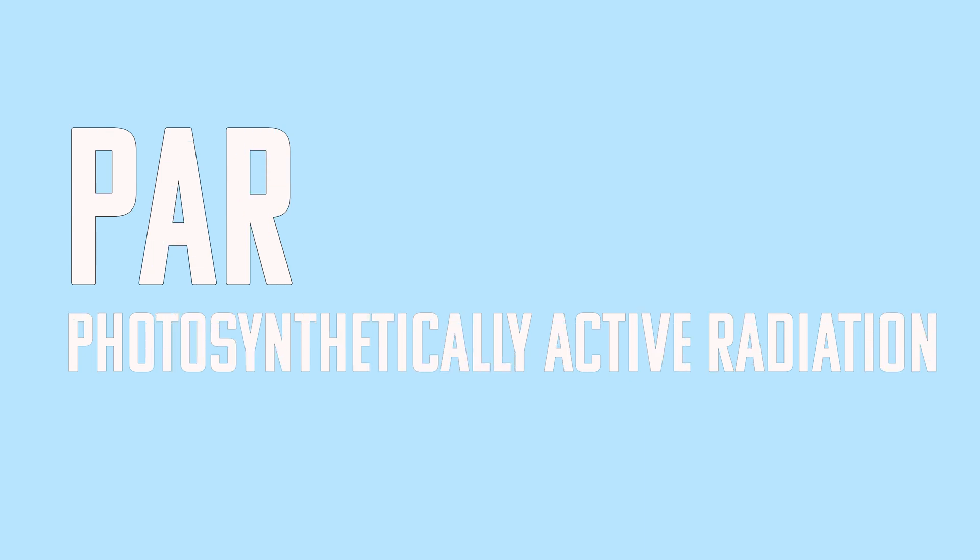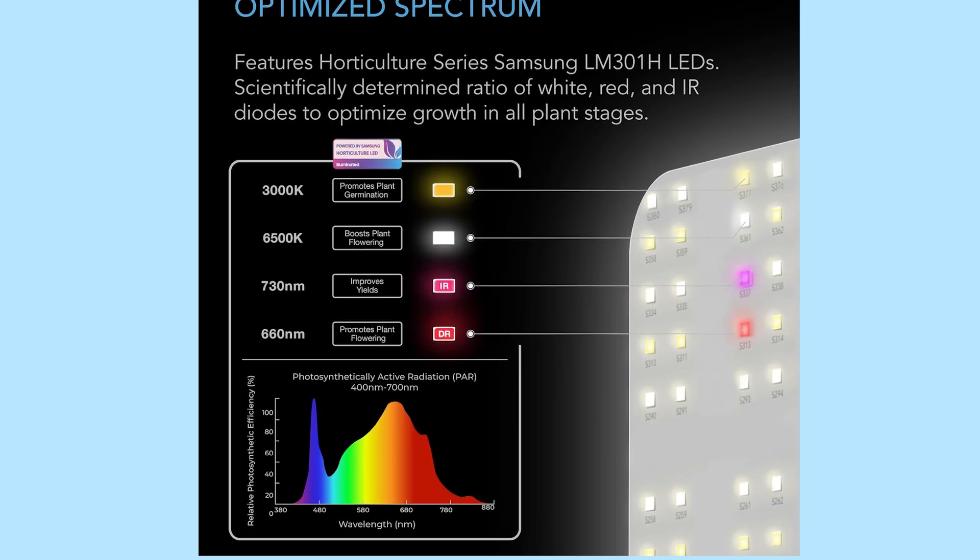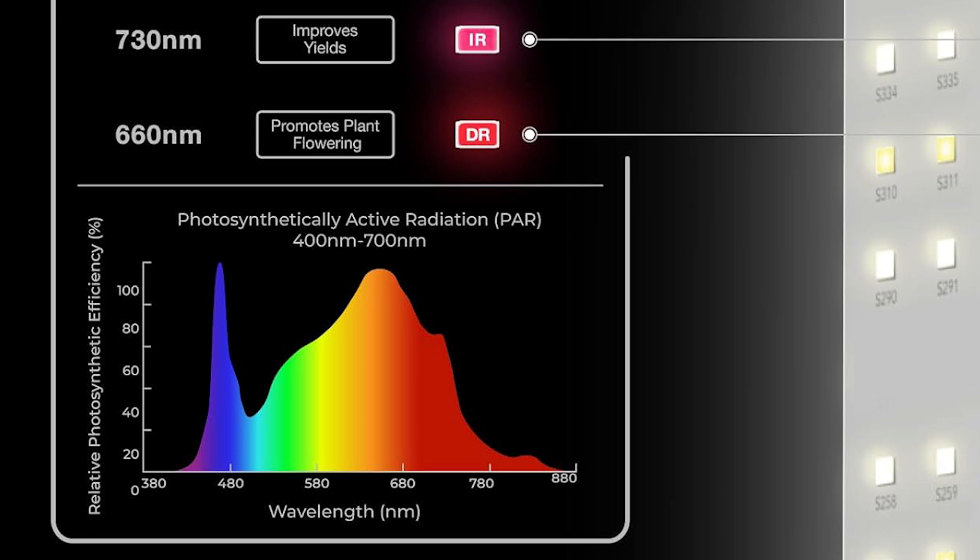The next important acronym is PAR, or photosynthetically active radiation. On a spectrum analysis graph, the PAR range shows only the wavelengths that are photosynthetically active — the ones the plant actually uses. They won't focus on wavelengths the plant doesn't use; they only show the photosynthetically active radiation, meaning the wavelengths plants use for photosynthesis.